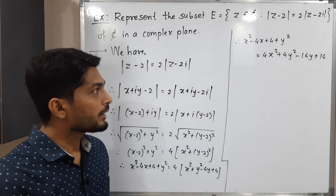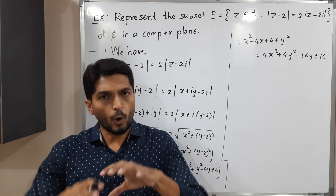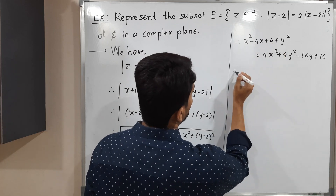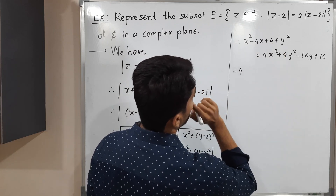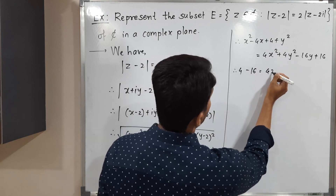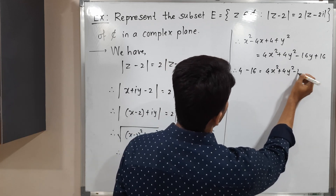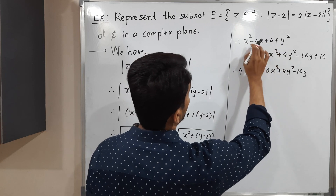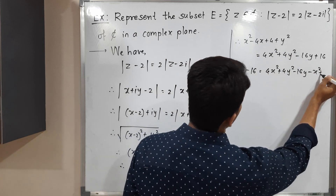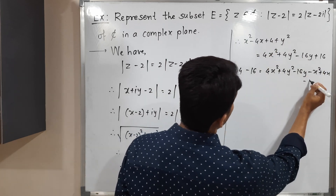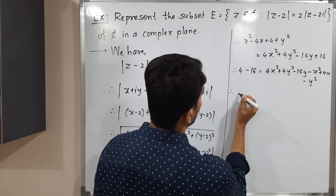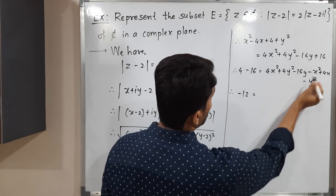Now I will keep constants on one side and all remaining variable terms on the other. Shifting 16 to the left gives 4 minus 16. Shifting all X and Y variable terms to the right: 4X squared minus X squared gives 3X squared, and 4Y squared minus Y squared gives 3Y squared, and we also have plus 4X and minus 16Y. So we have minus 12 equals 3X squared plus 3Y squared plus 4X minus 16Y.